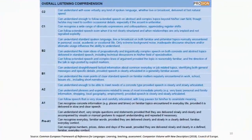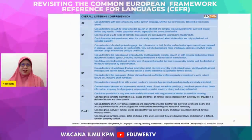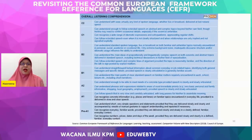Here we can see the overall listening comprehension scale, ranging from pre-A1 to C2 levels. For example, at C2, users can understand with ease virtually any kind of spoken language, whether live or broadcast, delivered at fast natural speed. If teachers are planning to conduct an activity involving listening as a member of a live audience, they can refer to that very specific skill.